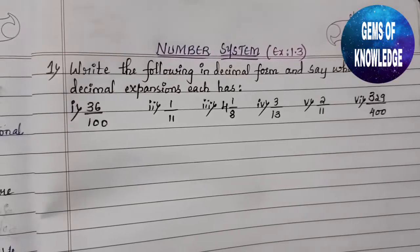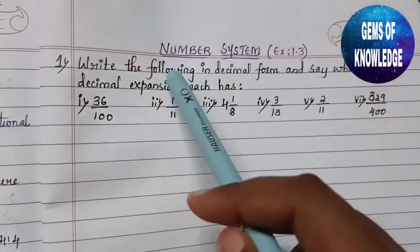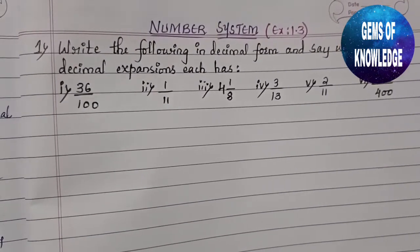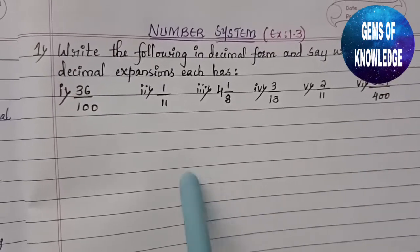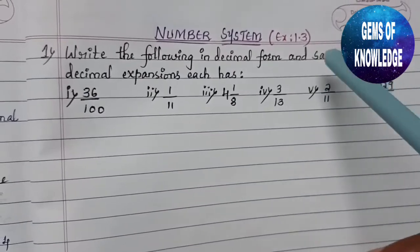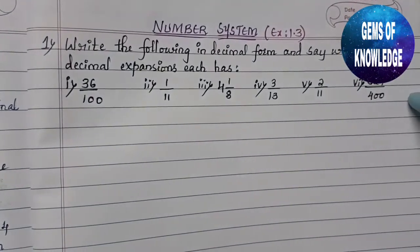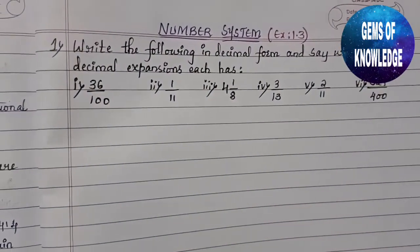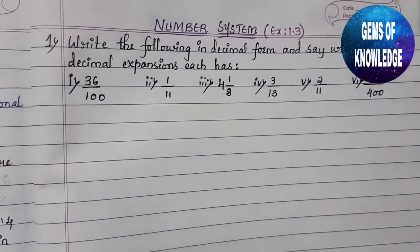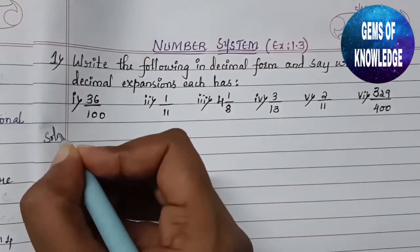Hello everyone, welcome back to my channel Gems of Knowledge. I am here with another video on Exercise 1.3 from the Number System. Today we are going to learn the first question from Exercise 1.3 in detail. The first question says: write the following in decimal form and say what kind of decimal expansion each has. There are six questions given and we have to divide and identify what type of decimal expansion each has.